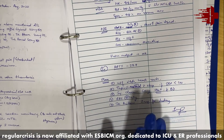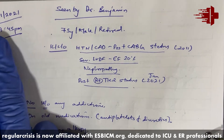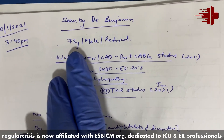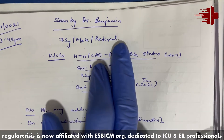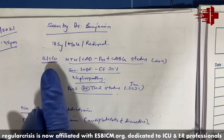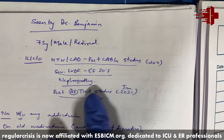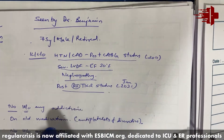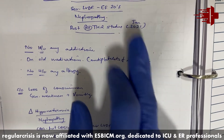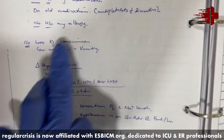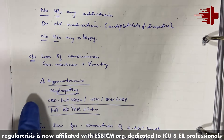Now we move to the second case. Always mention date and time — this is very important for accreditation bodies like NABH and others. Identification: 75-year male, retired — though the specific job needs to be mentioned and was missed here. Known case of hypertension, diabetes, post-CABG status, LV EF 20%, nephropathy, and recent post-TKR status. No addiction history. On antiplatelets and diuretics. No drug allergy. Presenting complaints: loss of consciousness, generalized weakness, and vomiting.